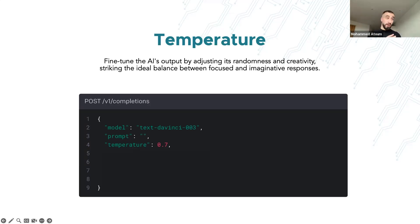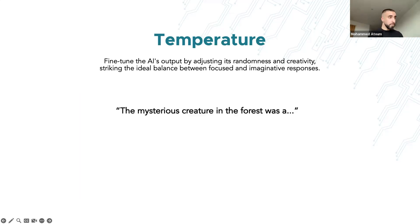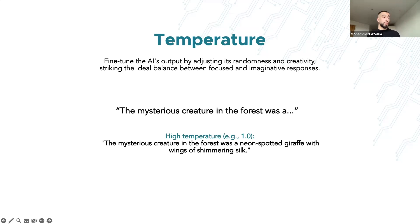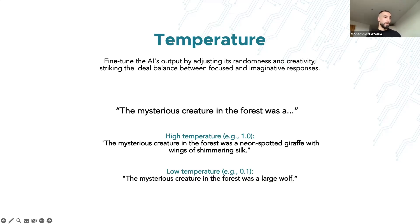For example, if you ask the AI to complete the sentence 'The mysterious creature in the forest was...' with a high temperature of 1.0, it might respond with something unexpected like 'a neon-spotted giraffe with wings of shimmering silk.' With a low temperature, it would give something common like 'a large wolf.' You can adjust temperature based on the desired level of creativity for your application.